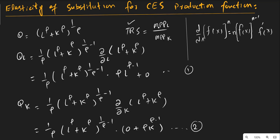As we know, the technical rate of substitution for any technology is always equal to the marginal physical productivity of one factor input divided by the marginal physical productivity of the other factor input. For the marginal physical productivity of labor and capital, we need the derivative of the function with respect to labor and with respect to capital.